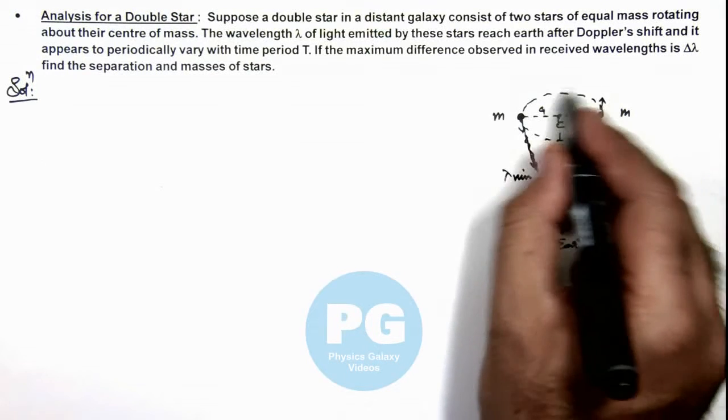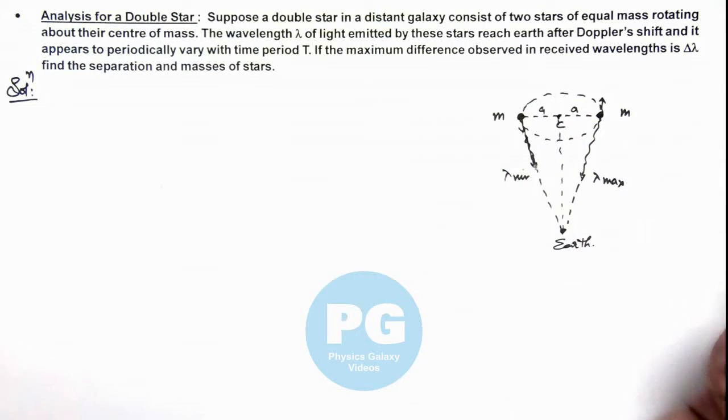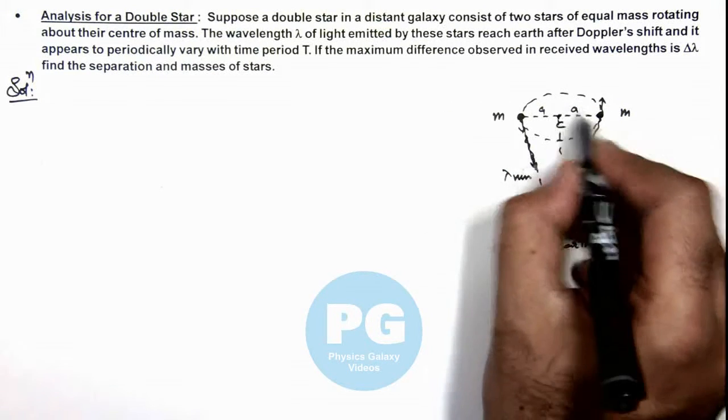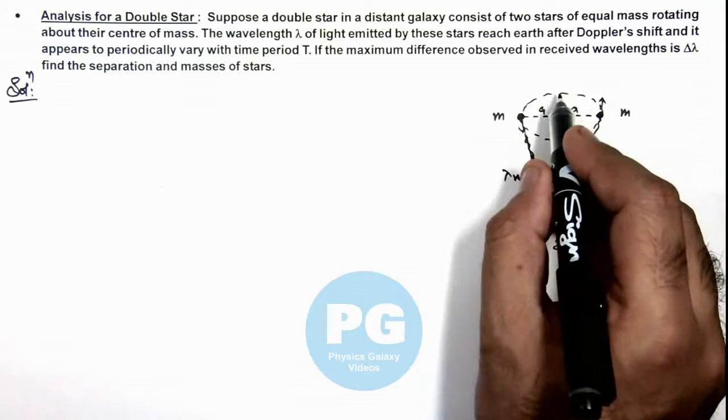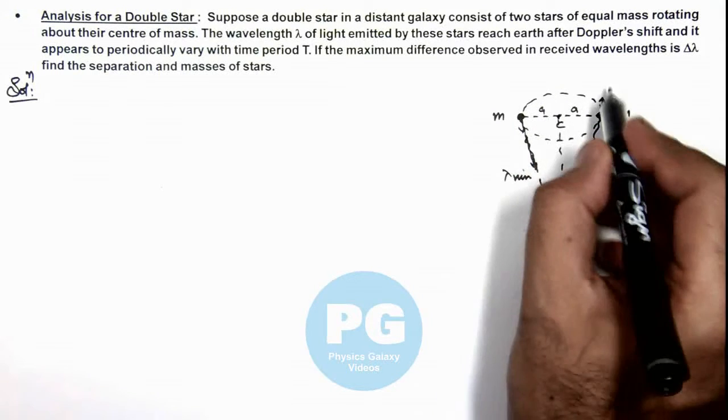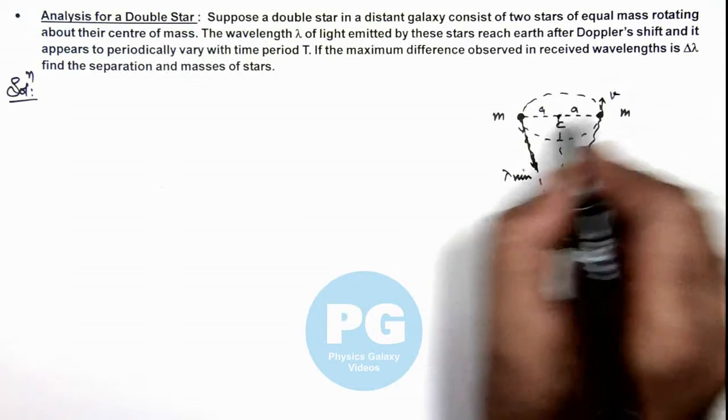The time gap between the 2 positions we can assume directly as the distance travelled divided by the velocity, if the stars are moving at a velocity v.